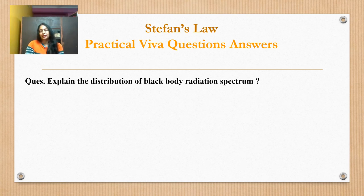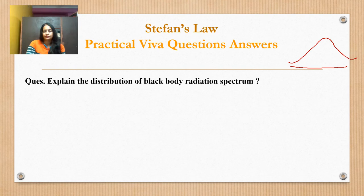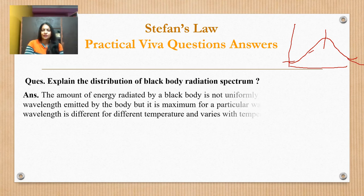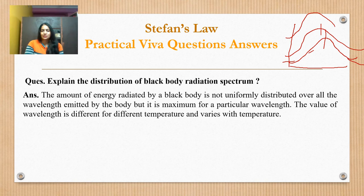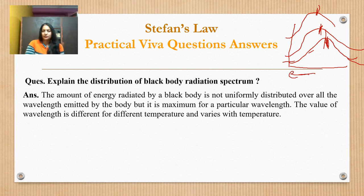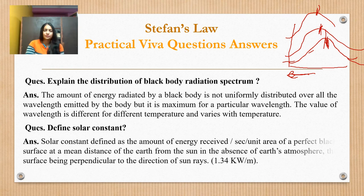Explain the distribution of the black body radiation spectrum. The amount of energy radiated by a black body is not uniformly distributed over all wavelengths, but it is maximum for a particular wavelength. The value of that wavelength is different for different temperatures.